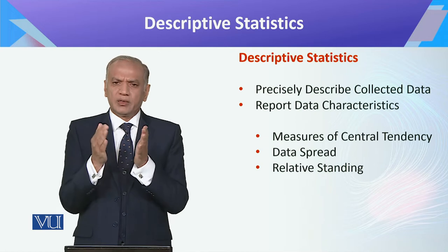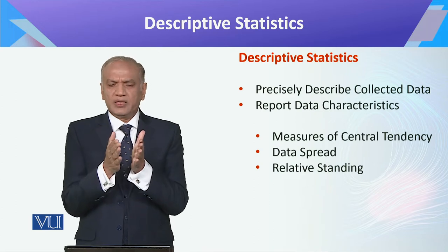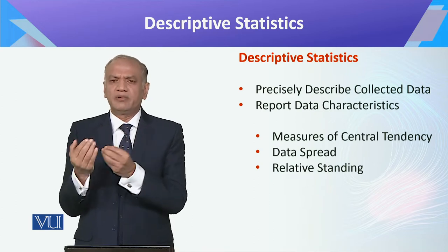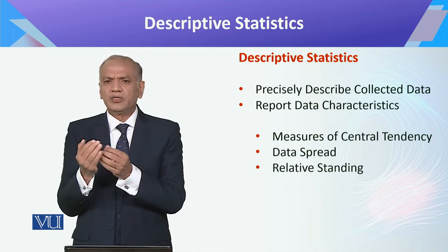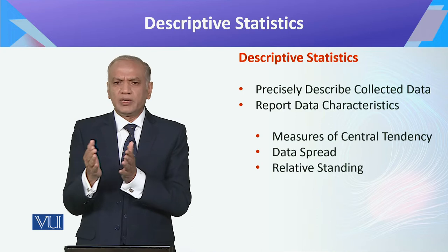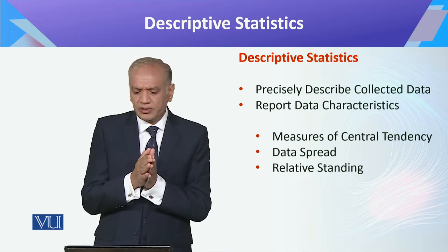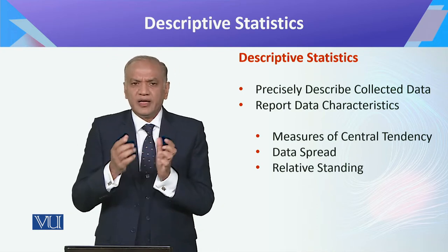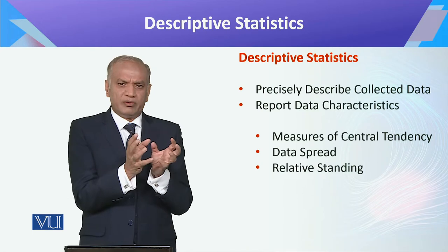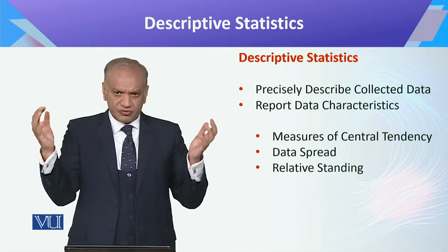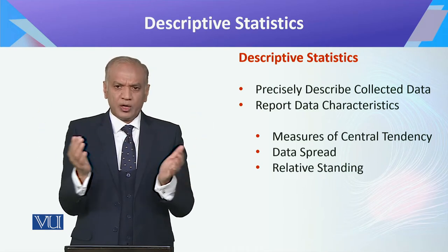This is what we call standard deviation and variance. These are basically data spread measures. And then there is what we call relative standing — that one set of data is within a sphere of data.